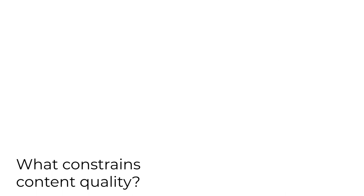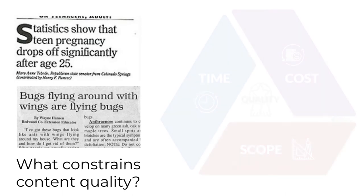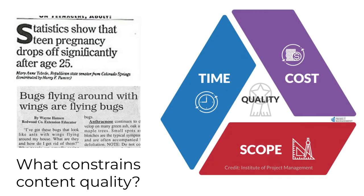You've probably noticed that the quality of news content — print news in particular — has changed. Most would agree the overall quality has declined. I believe the triple constraints can explain the decrease: the desire to cut costs reduces the number of editors, and the rush to publish content reduces the time allowed for editing. Those constraints lead to lower quality.